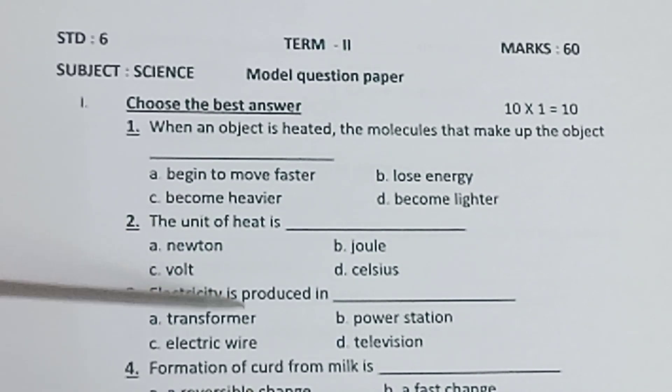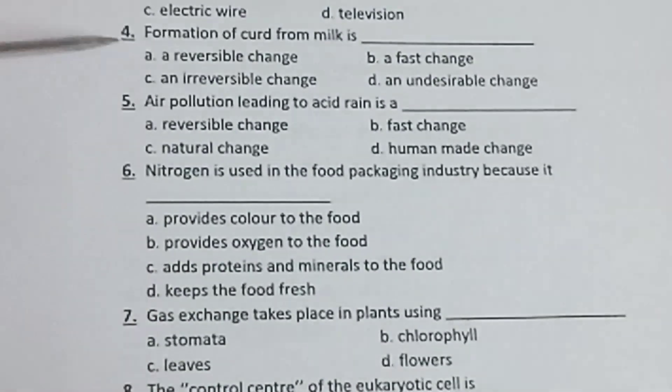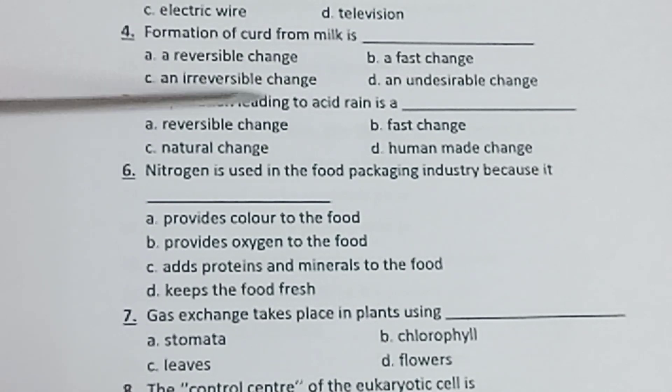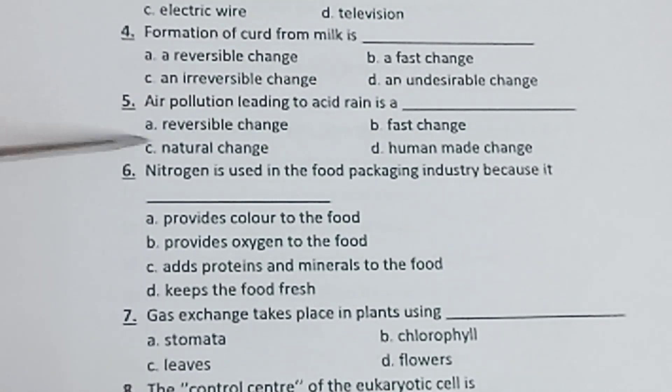Third one: Electricity is produced in - a) transformer, b) power station, c) electric wire, d) television. Fourth one: Formation of curd from milk is - a) reversible change, b) a fast change, c) an irreversible change, d) an undesirable change.